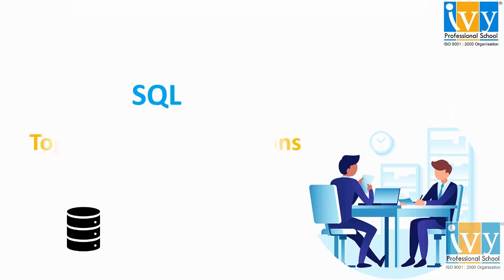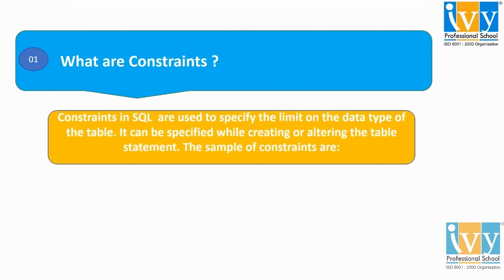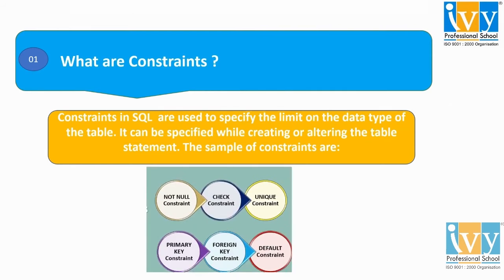Today I am going to discuss part 2 of the top 5 interview questions from the topic SQL, that is Structured Query Language. These questions are frequently being asked by the top companies during the interview. So let's begin. Question 1: what are constraints? Constraints in SQL are used to specify the limit on the data type of the table. It can be specified while creating or altering the data table statement. The types of constraints are: NOT NULL constraint, CHECK constraint, UNIQUE constraint, PRIMARY KEY constraint, FOREIGN KEY constraint, and DEFAULT constraint.